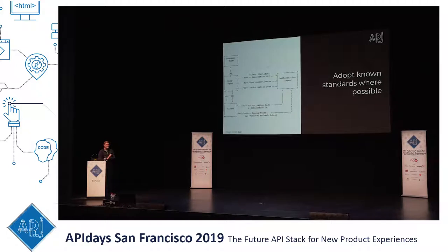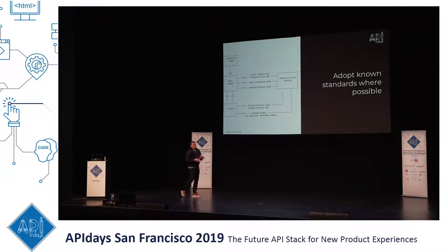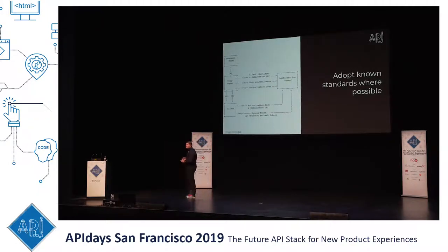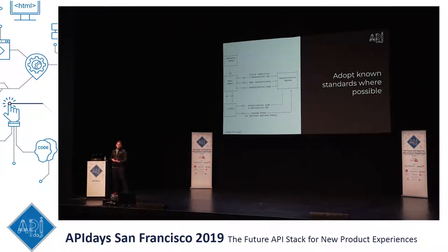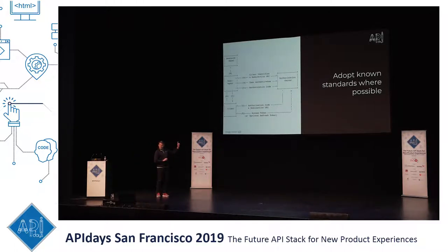Second DX point: adopt known standards where possible. This is especially important when it comes to security — there are RFCs that have verified security standards that will be met. Internally, we use GeoJSON for location and OAuth. We have a bunch of other standards we piggyback on so developers can find libraries for their own programming language rather than doing it themselves, because there's so much adoption already out there for those standards.